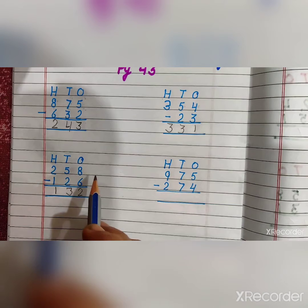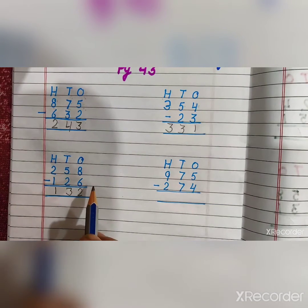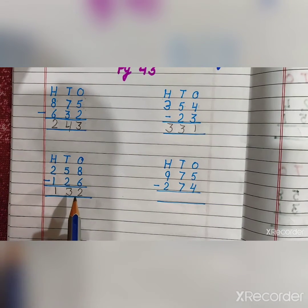2 minus 1 is equal to 1. 258 minus 126 is equal to 132.